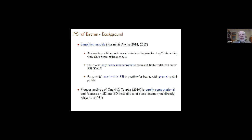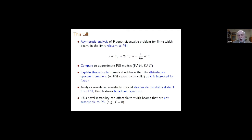The new approach is the topic of this talk. What we're going to do is go back to the Floquet eigenvalue problem for a finite width beam and perform an asymptotic analysis in the limit relevant to PSI. That limit is a joint situation where the underlying beam has small amplitude (epsilon much less than one), we're looking at disturbances of very short scale (wave number K much bigger than one), and the Reynolds number is very high (inverse Reynolds number much less than one). The first goal was to compare to the approximate PSI models.